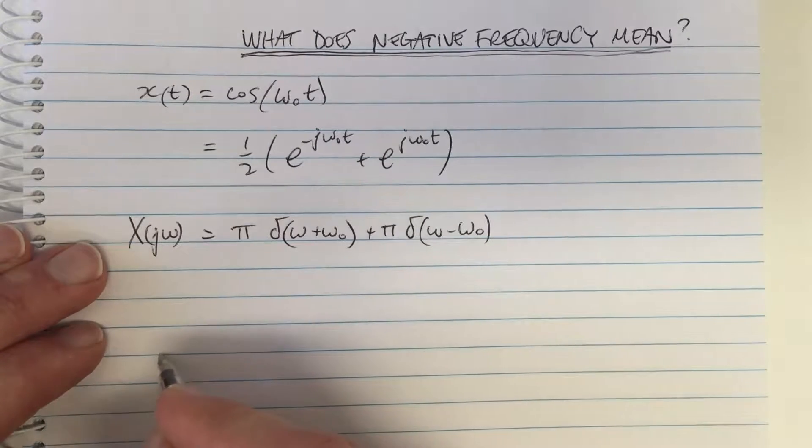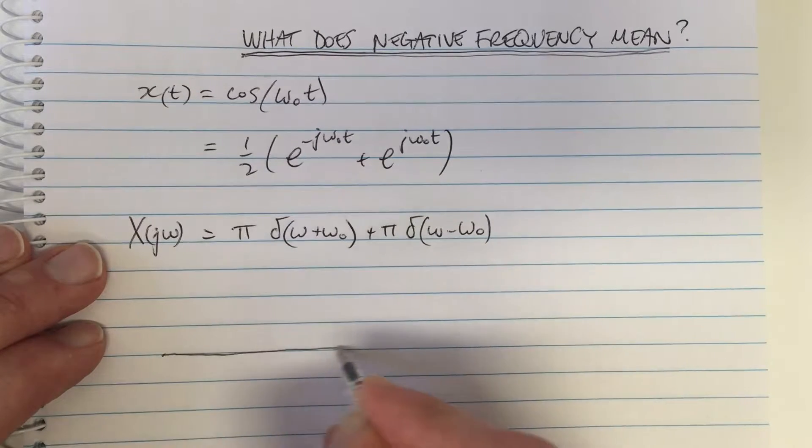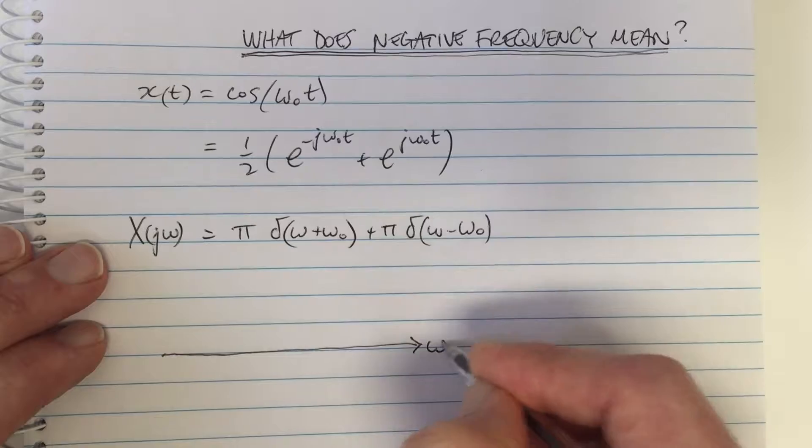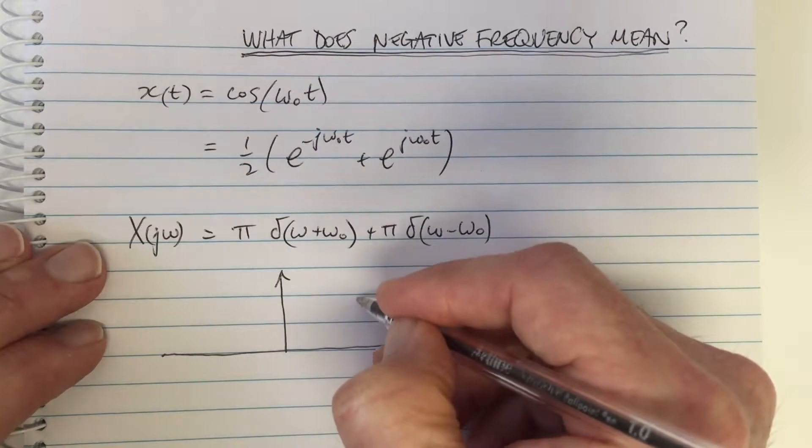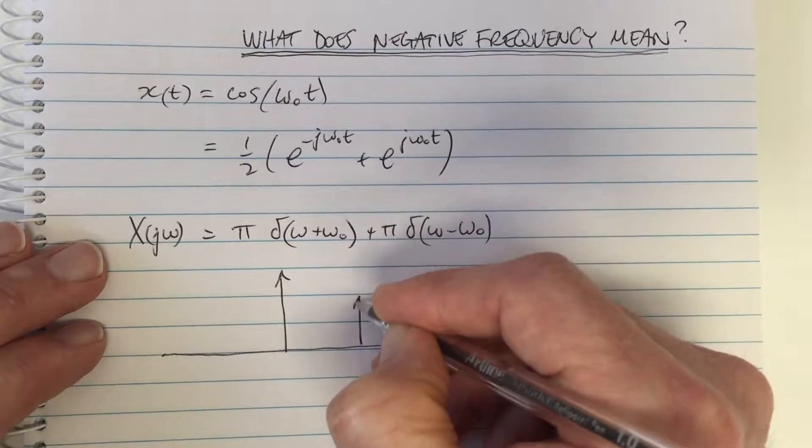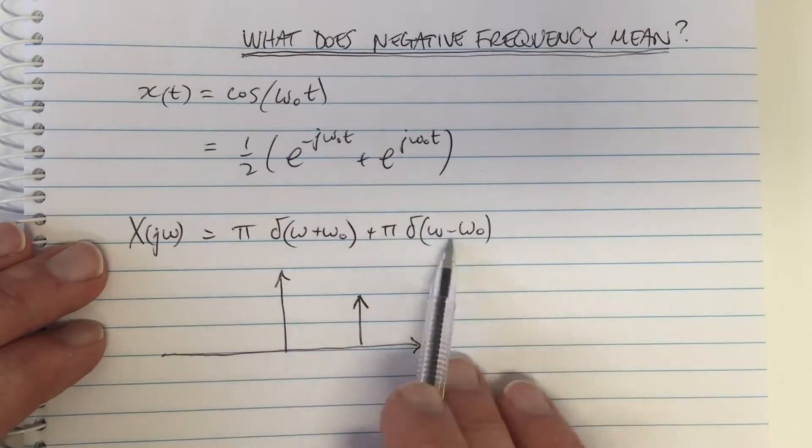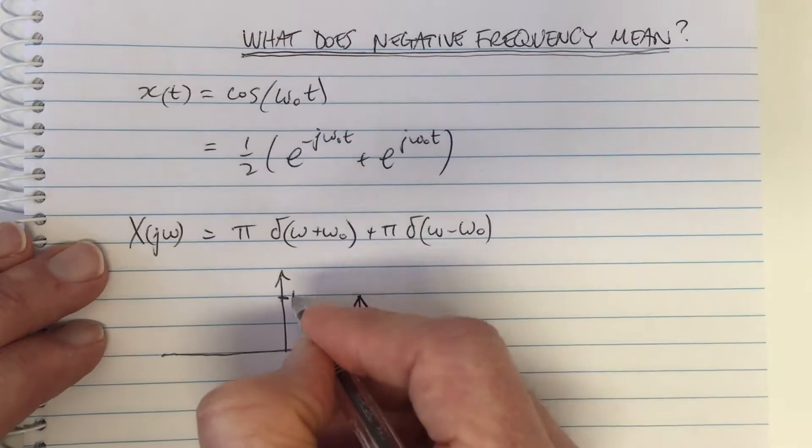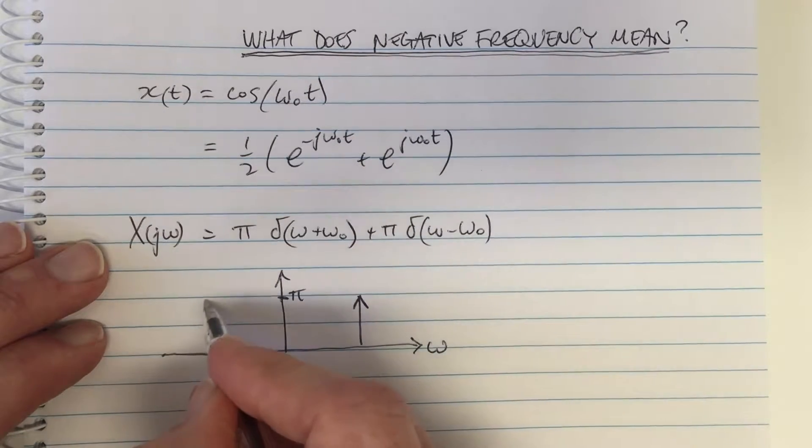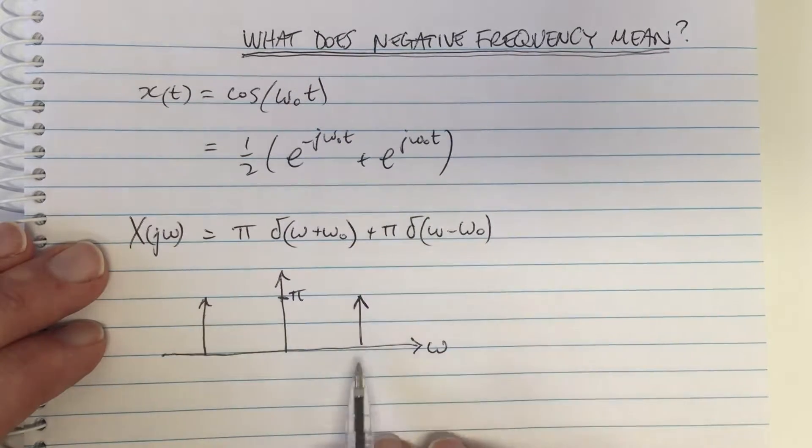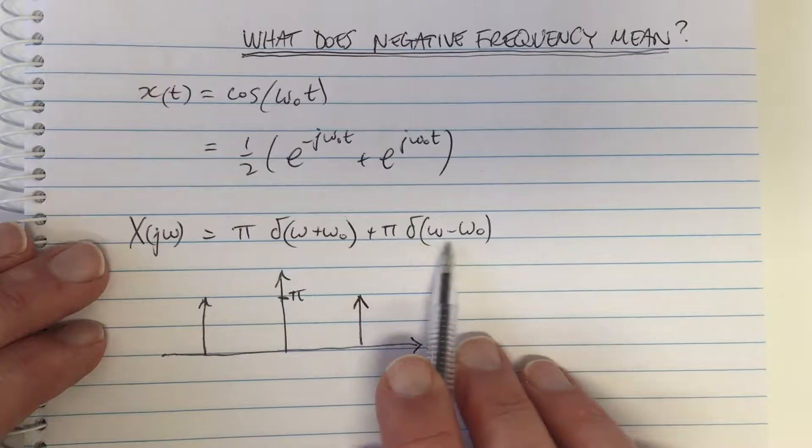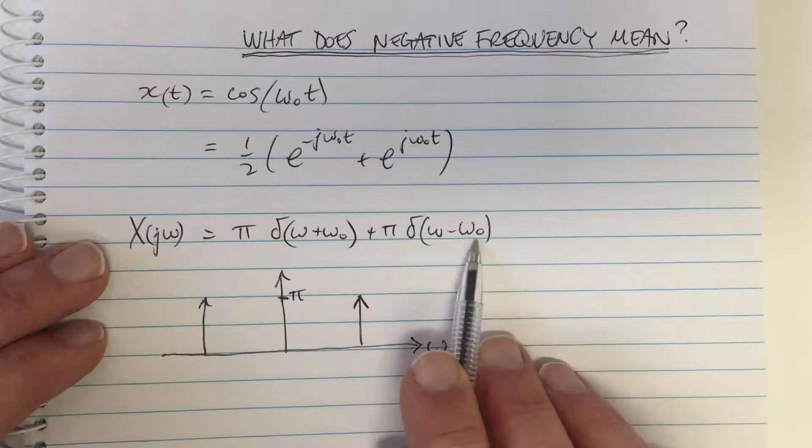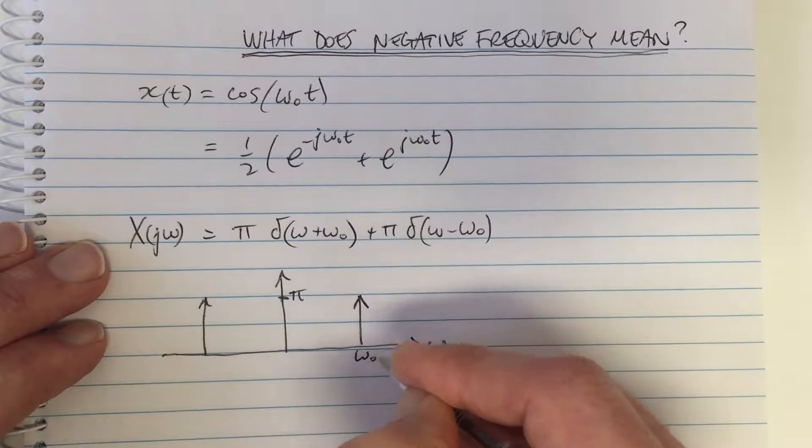And then we plot that Fourier transform with respect to omega. This is two delta functions. The height of those delta functions is pi. And one of them is at the frequency omega 0. That's this one here. The delta function here is shifted to the place where omega equals omega 0. So that's omega 0.